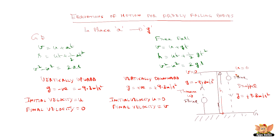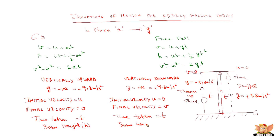The time taken for a stone to fall from a height H to the ground, and the time taken for a stone thrown upward to reach height H, are the same — provided the height is the same. So if a stone dropped from height H takes time T, a stone thrown up to height H also takes time T.